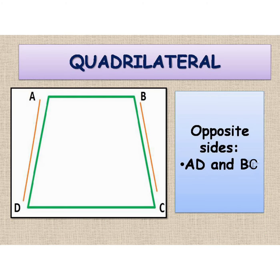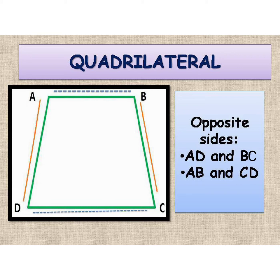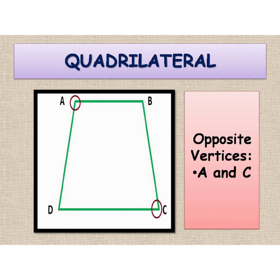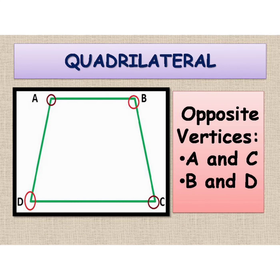In this given quadrilateral, we can see AD and BC are opposite sides. The other pair of opposite sides is AB and CD. Similarly, we can find pairs of opposite vertices. Vertices A and C are opposite to each other. B and D are opposite vertices.